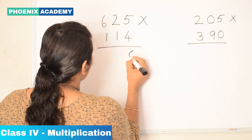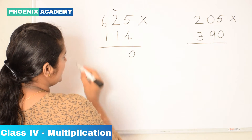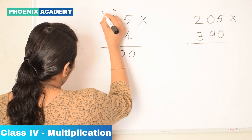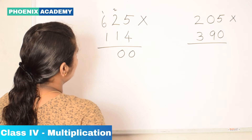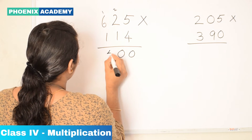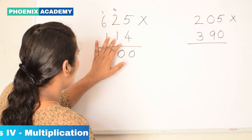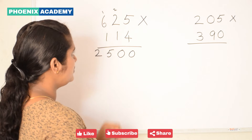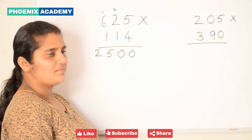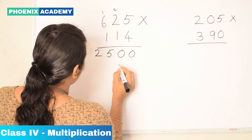4 times 5 is 20, carry forward 2. 4 times 2 is 8, plus 2 is 10, carry forward 1. 4 times 6 is 24, plus 1 is 25. Then multiply 1 with 625 — multiplying a number with 1 is always the same number, so we write 625 as the partial product.